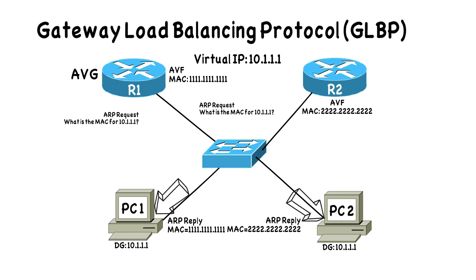Now when PC2 attempts to send traffic off of the local subnet, it's going to the same default gateway IP address that PC1 uses. However, it's going to be using a different router, because the MAC address in the Layer 2 header of that Ethernet frame is destined for R2 instead of R1. This is how we get load balancing without any administrative work of saying this VLAN goes here and that VLAN goes there — we get load balancing automatically. And we also get redundancy.